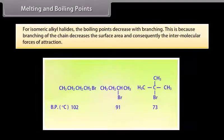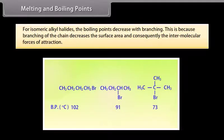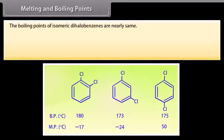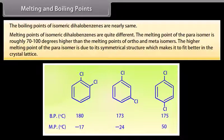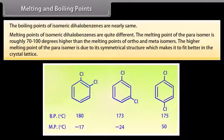For isomeric alkyl halides, the boiling point decreases with branching, because branching of the chain decreases the surface area and consequently the intermolecular forces of attraction. The boiling points of isomeric dihalobenzenes are nearly the same. The melting points of isomeric dihalobenzenes are quite different — the melting point of the para-isomer is roughly 70 to 100 degrees higher than the ortho- and meta-isomers, due to its symmetrical structure fitting better in the crystal lattice.